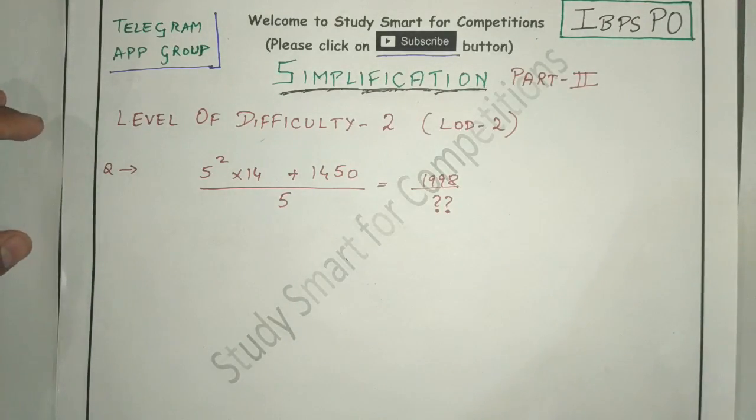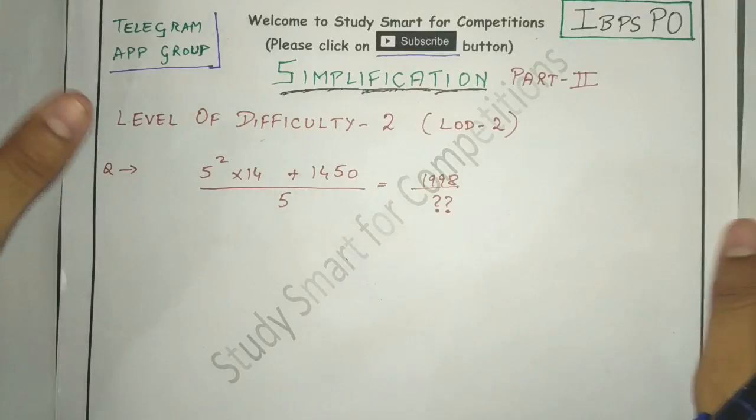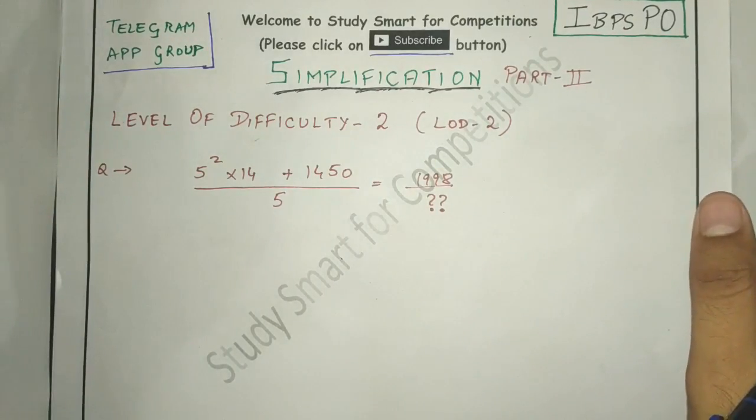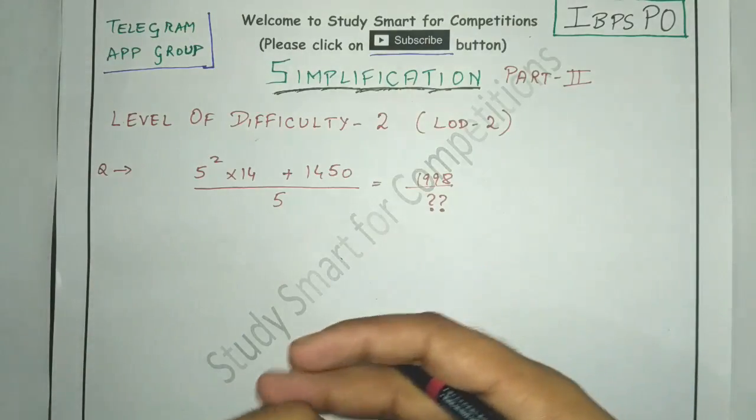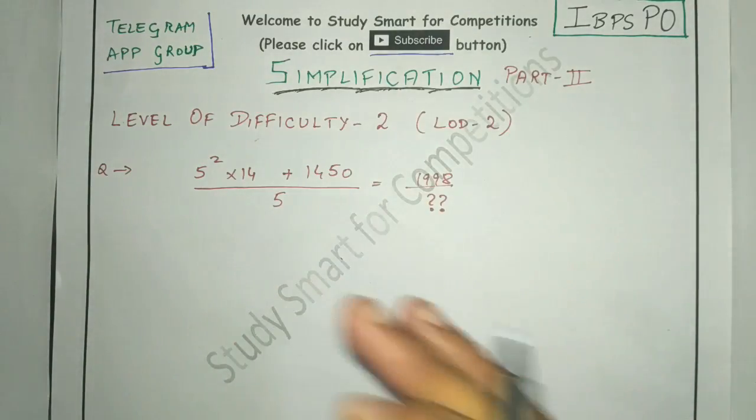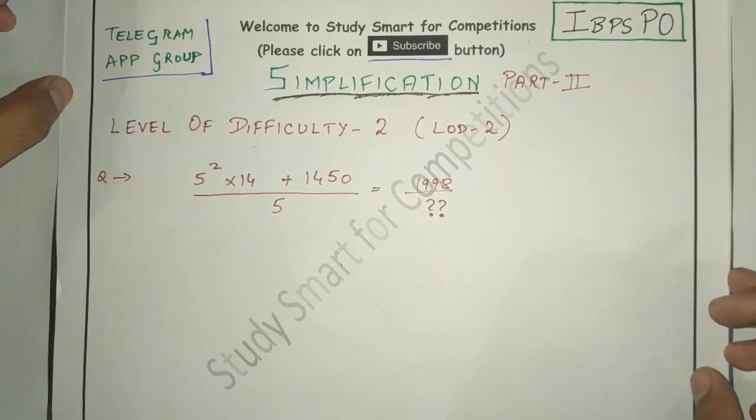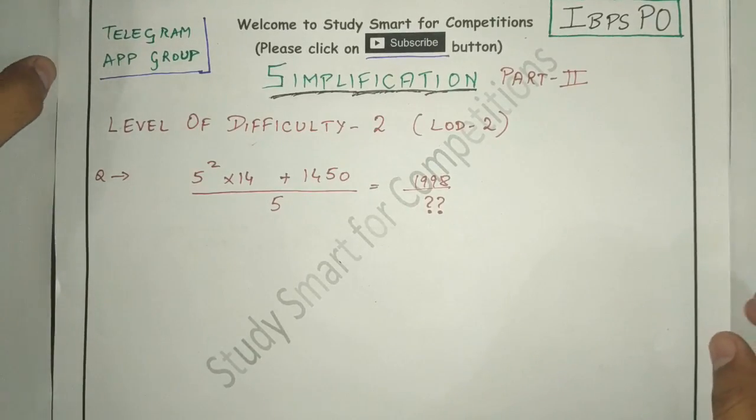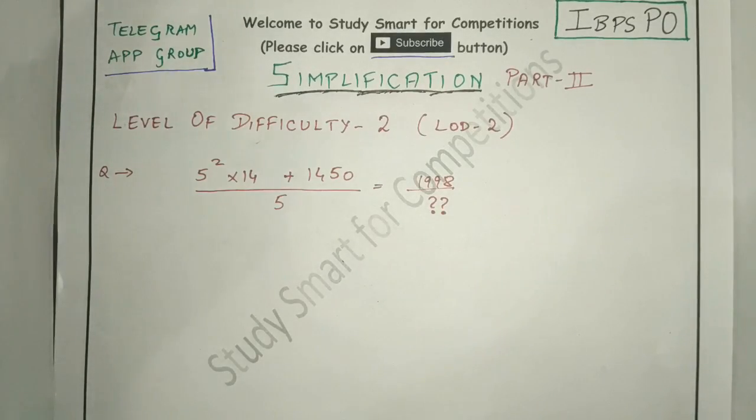Proceeding on with the first question. There are different types to solve simplification questions, and you may conclude that as a part of approximations as well as average kind of things. Whatever suits you, you can take that method. I'll try to do it the shortest possible method.